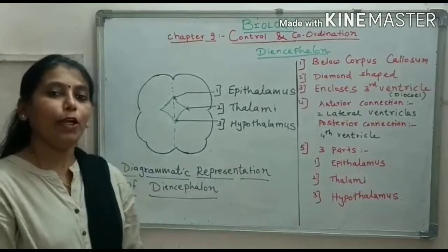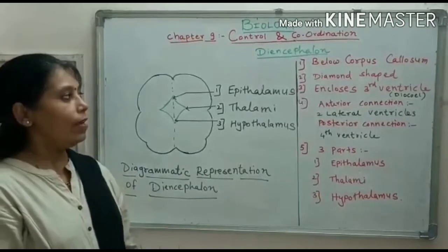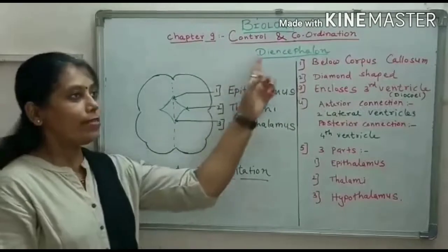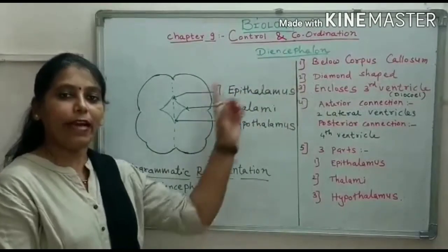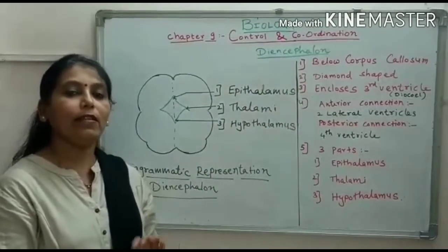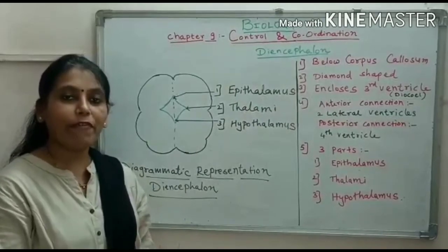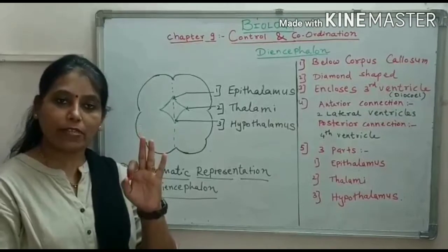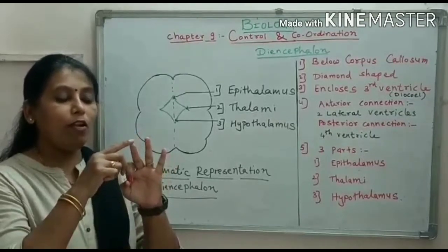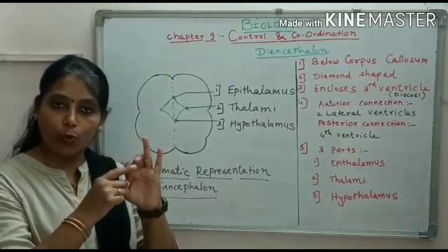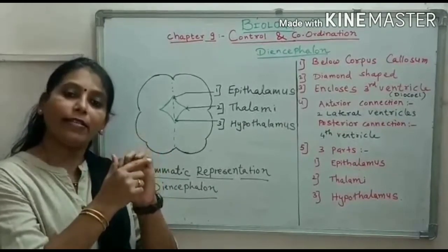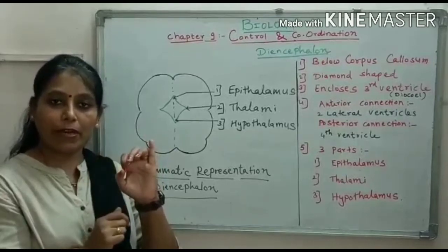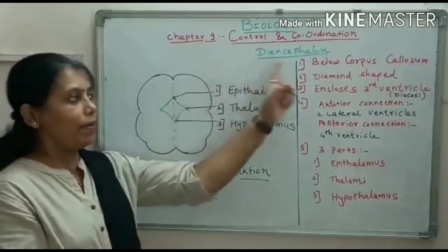Hello everyone. Today we are going to study the topic Diencephalon. Diencephalon is the part of the forebrain. We have studied forebrain — it consists of three parts: olfactory lobe, cerebrum, and Diencephalon. Out of these three, the first two we have completed. Now let us study Diencephalon.